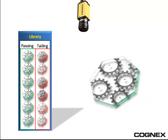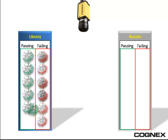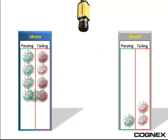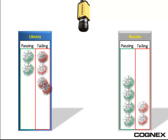Because while the adjustment may correct the result of the target sample, it may also affect another part in a negative way. Test Run allows you to run a library of known passing and failed parts through the changes.